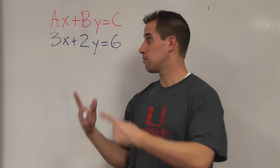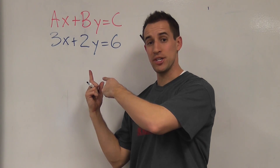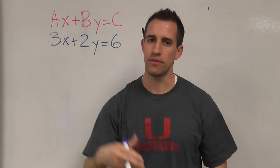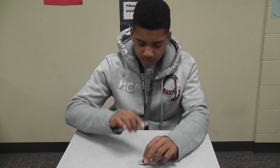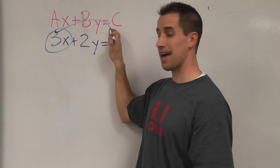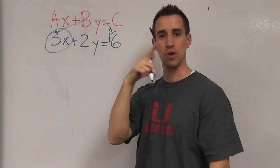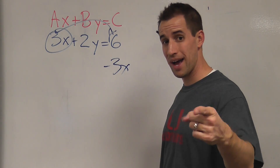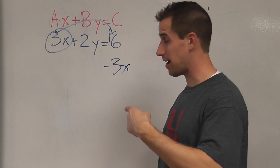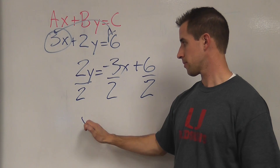You start with this problem in the standard formation, but now you gotta change it to a different equation. You need a point where to start, another to make the line. So let's start moving stuff, just listen to this rhyme. First you move the X to the opposite side — when you move it, don't forget to change the sign. If there's a number by the Y, then you gotta divide. Hit the number by the X and the one to the right.